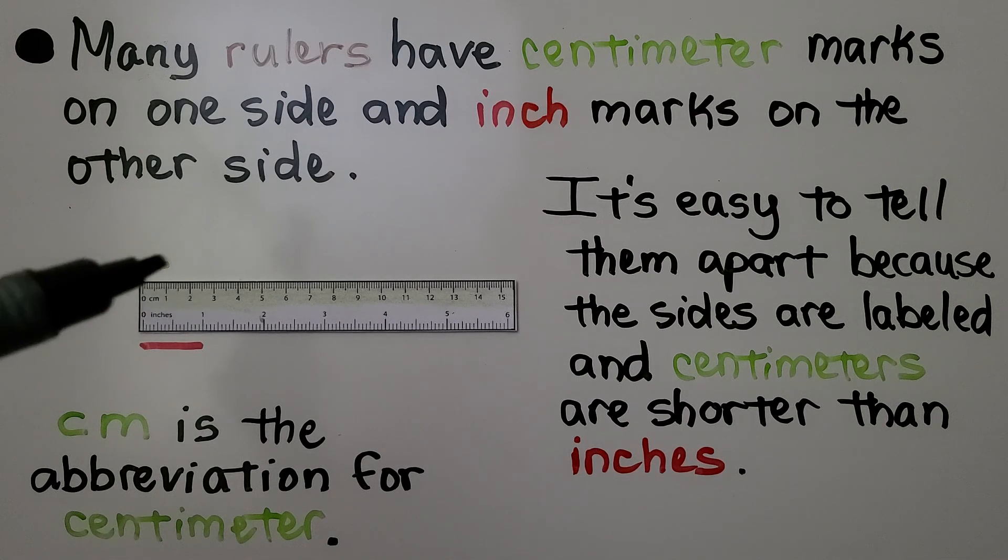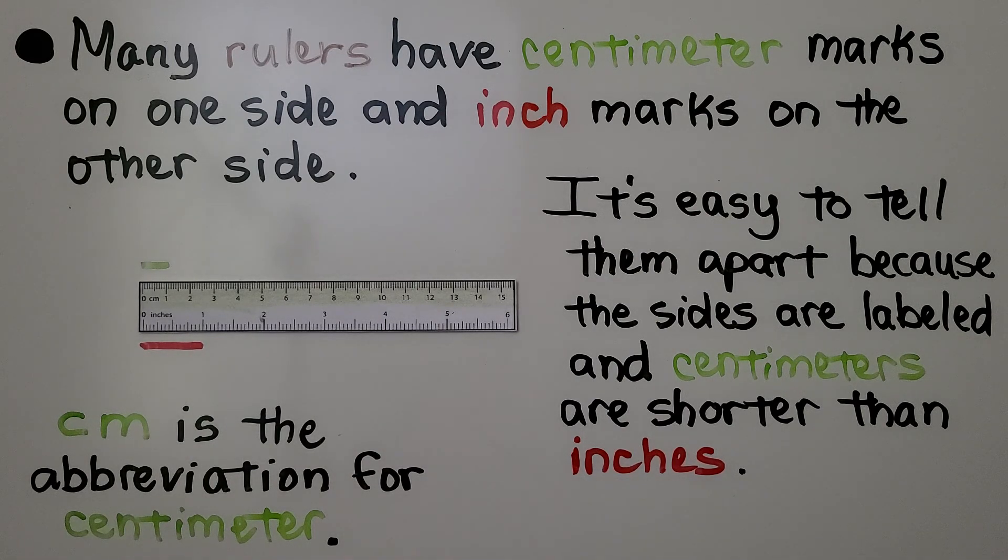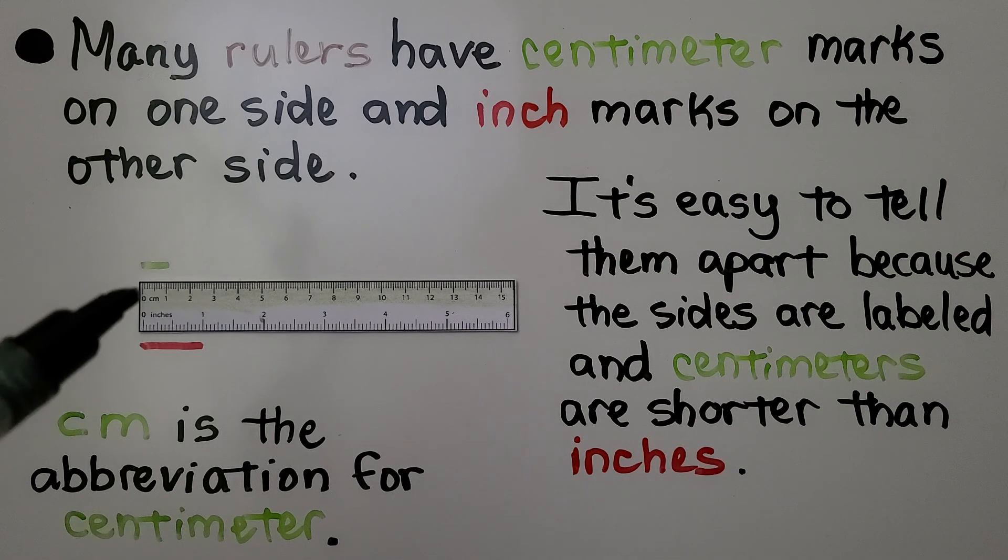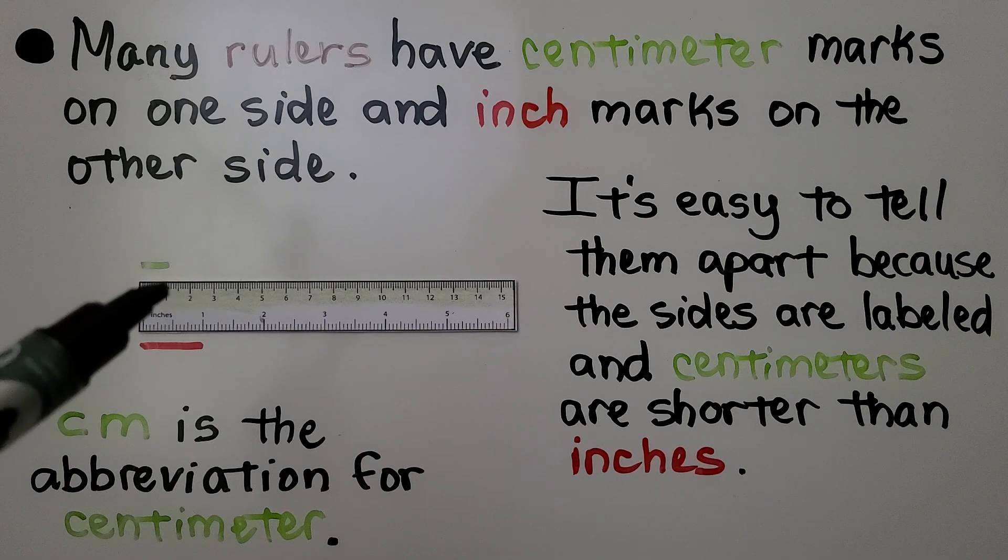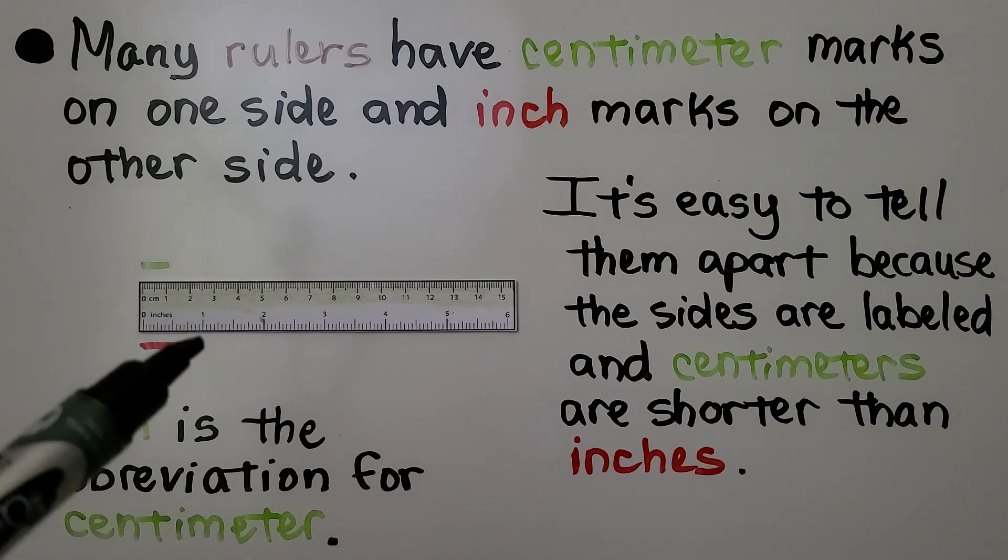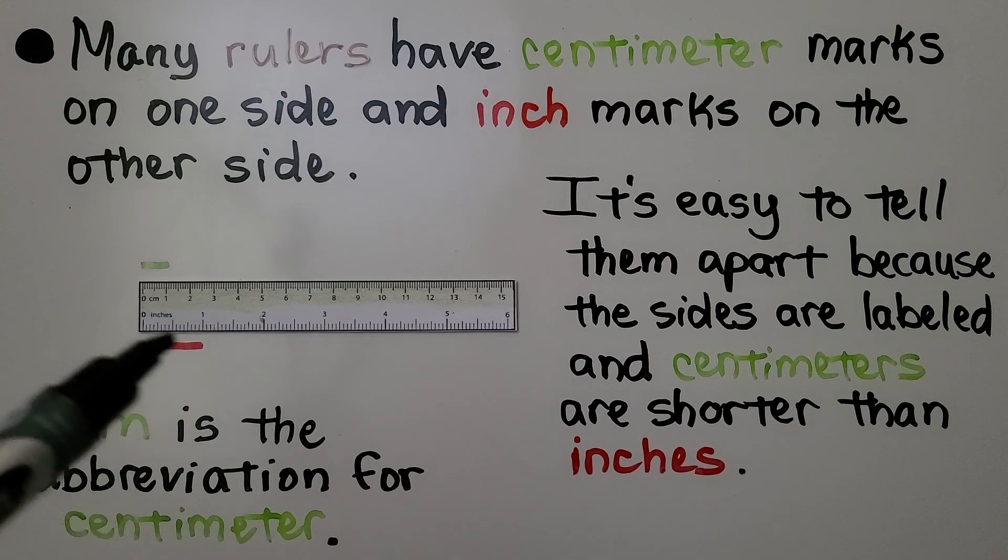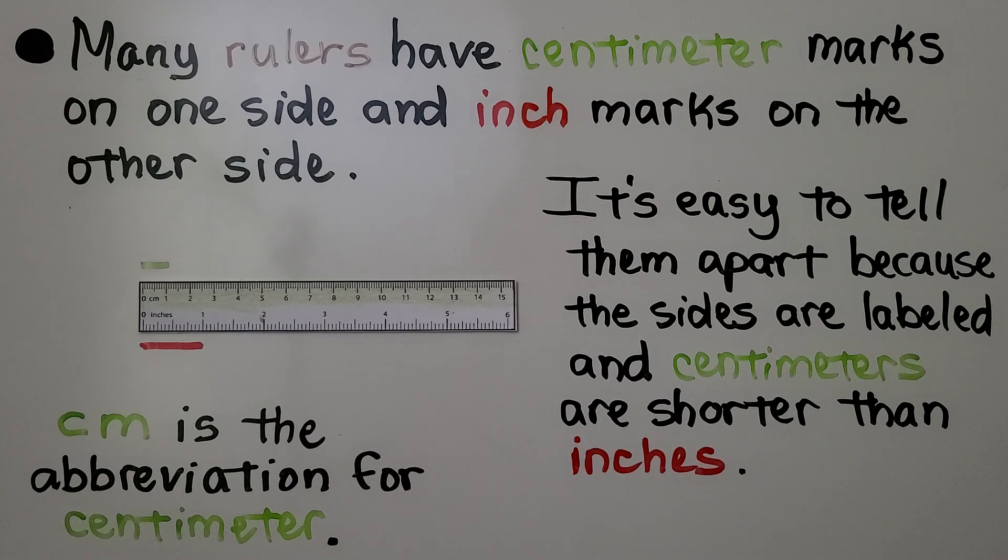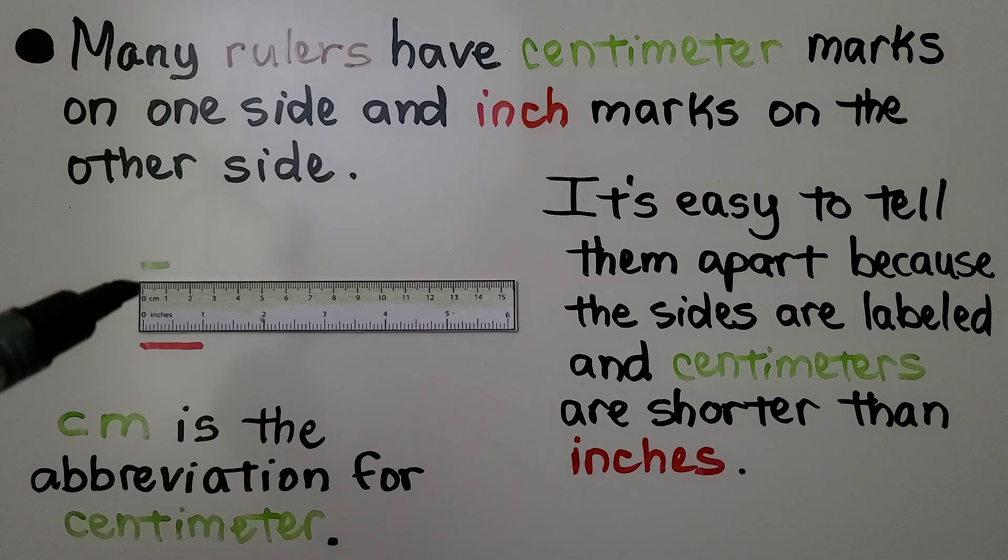We know these are the inches, these are the centimeters, not only because they're labeled but centimeters are shorter than inches. We can see the centimeters go 0, 1, 2, 3, and the inches are going 0 and then 1 is way over here. So because inches are longer, we know these shorter ones are the centimeters, and it's labeled.